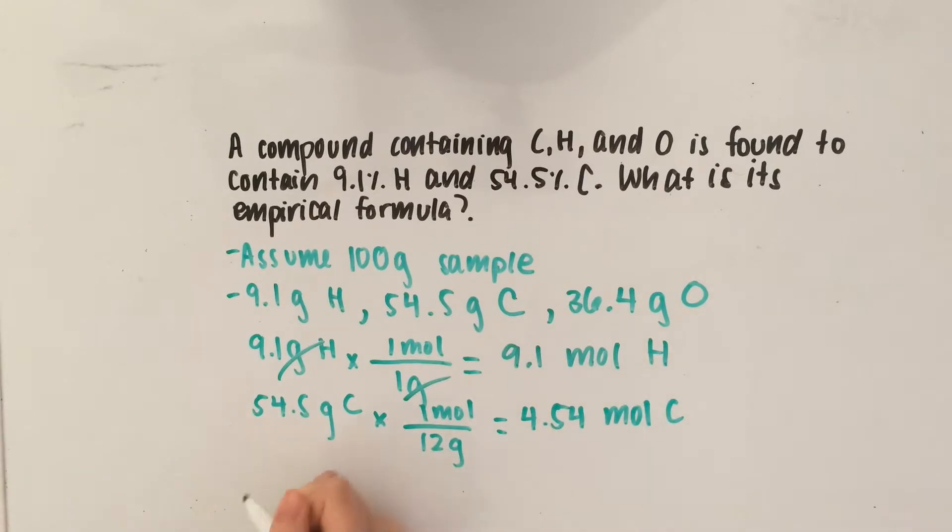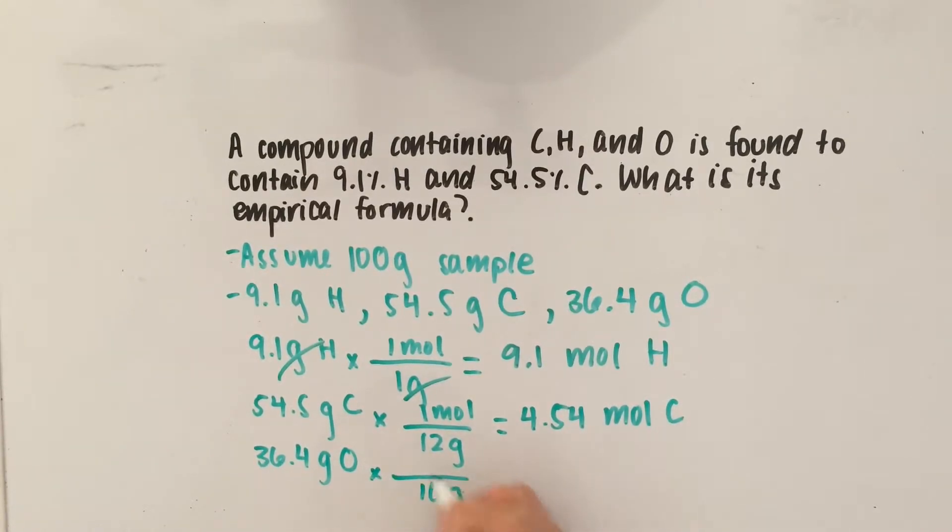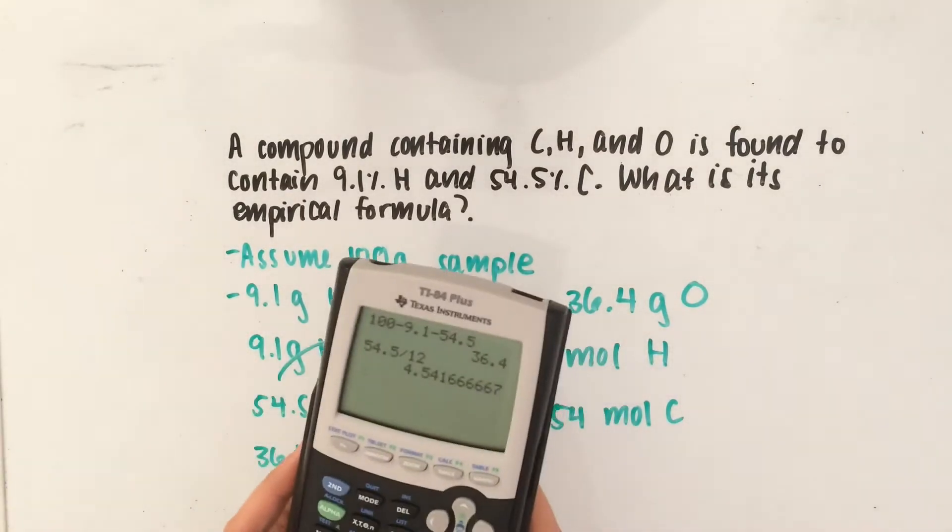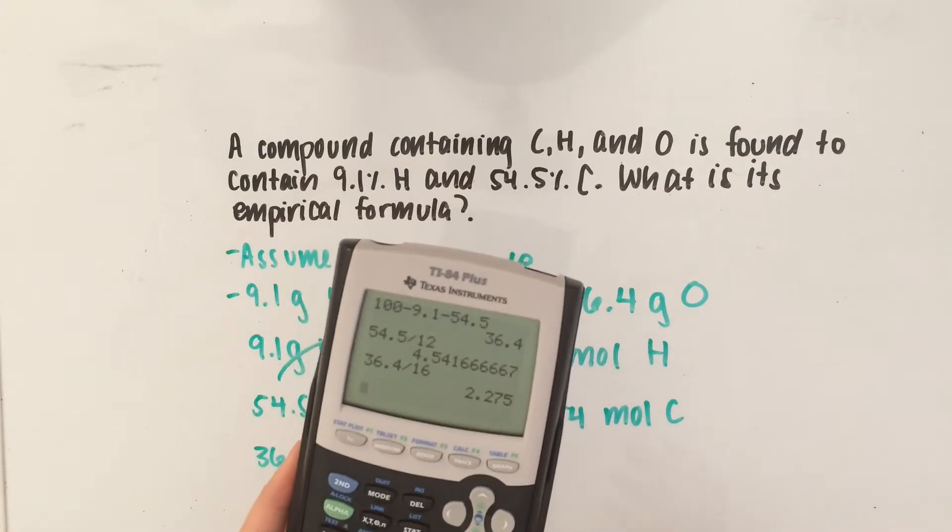So, finally, let's work on the oxygen. 36.4 grams of oxygen. Let's apply that by the molar mass, which is 16 grams per mole. So, now we have 36.4 divided by 16 grams. That gives you 2.28.